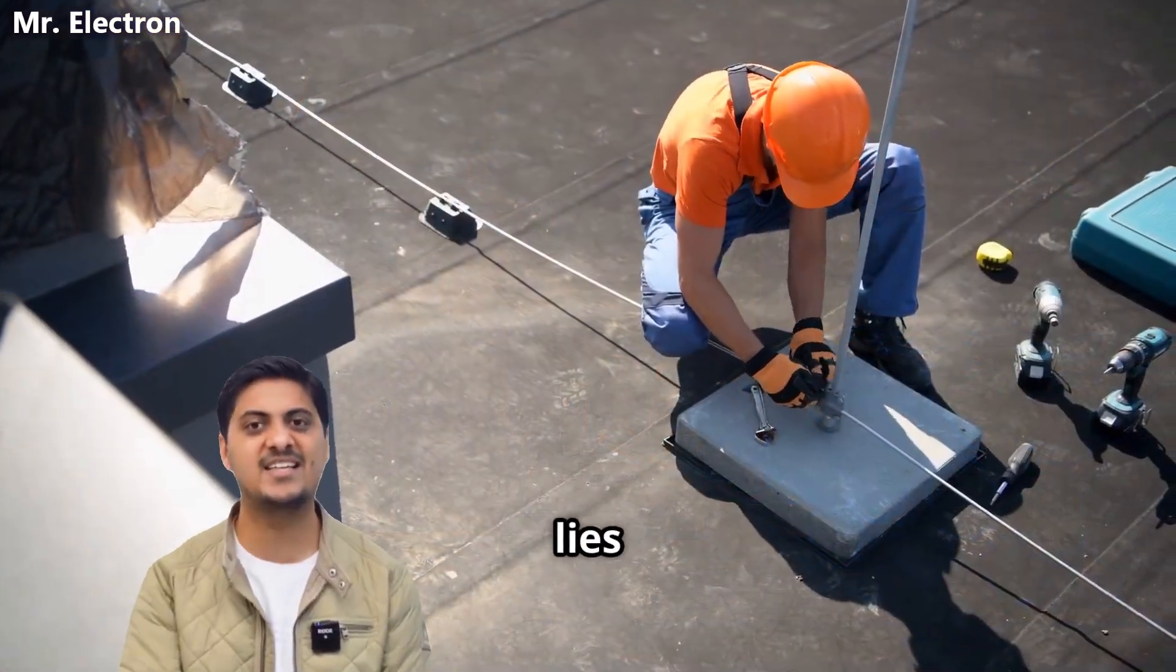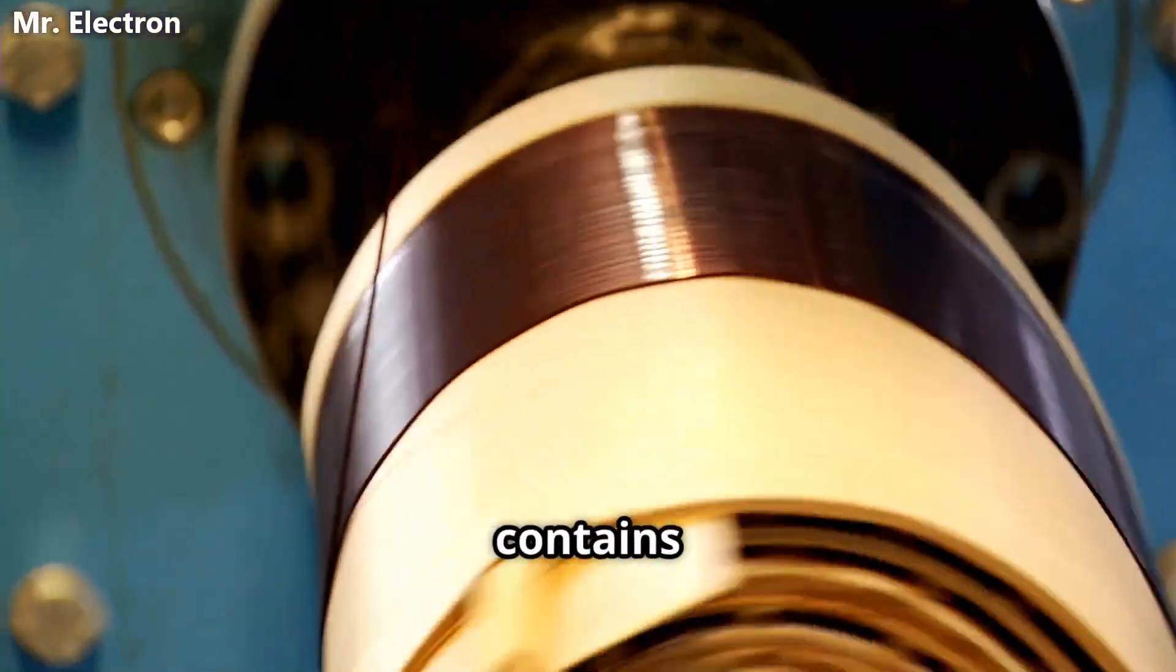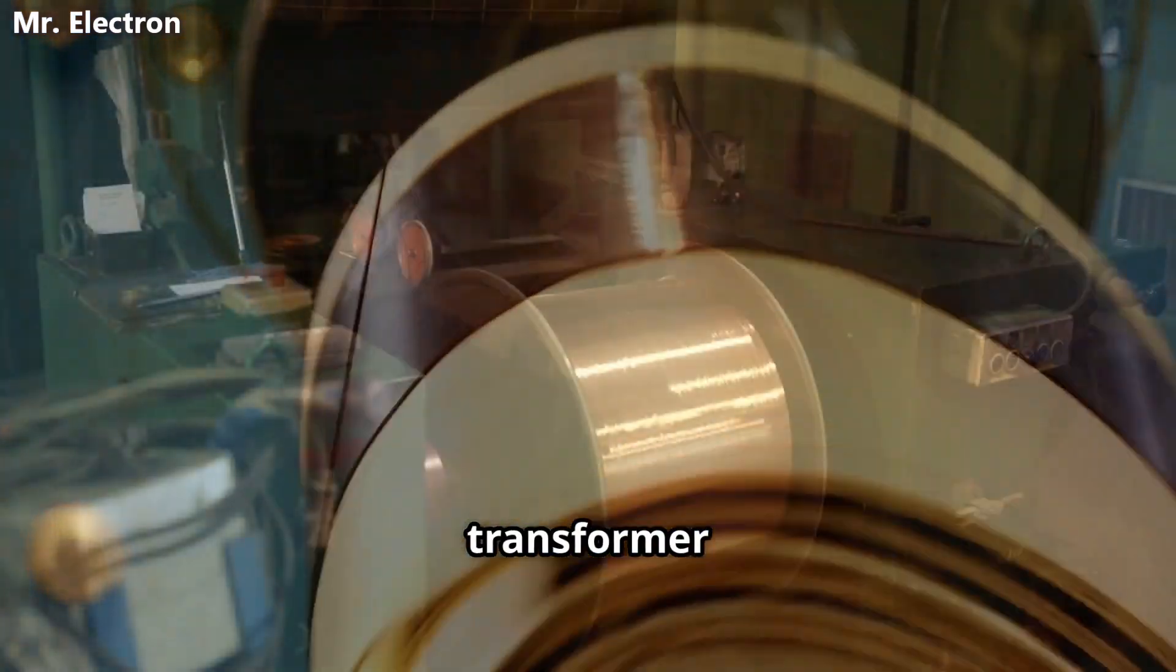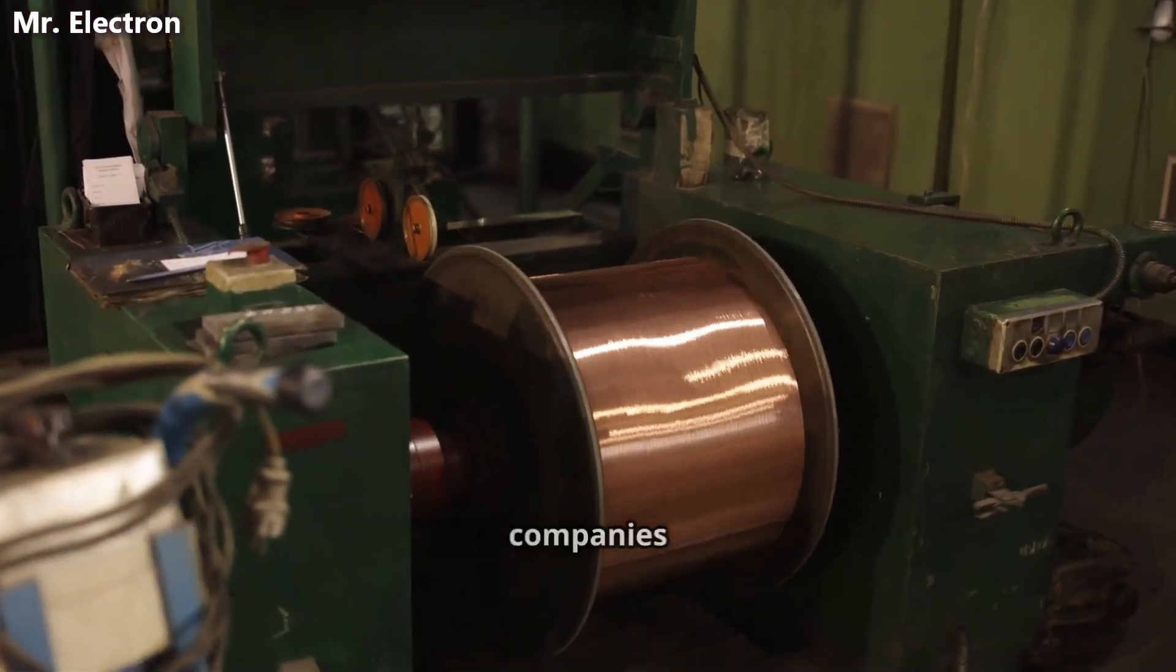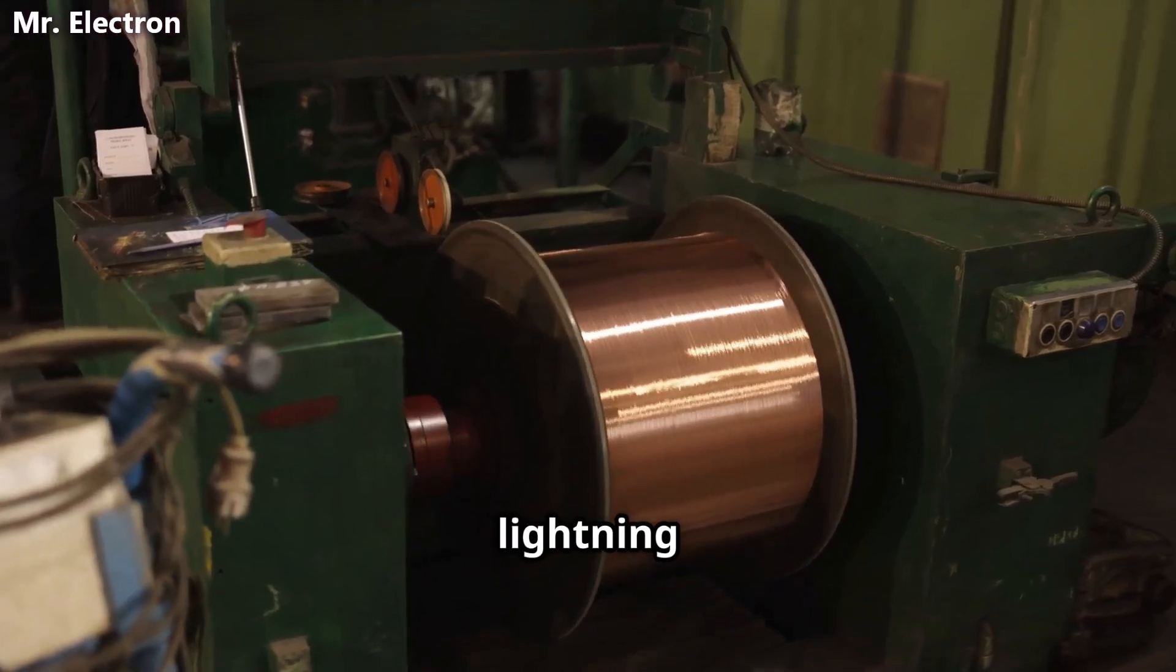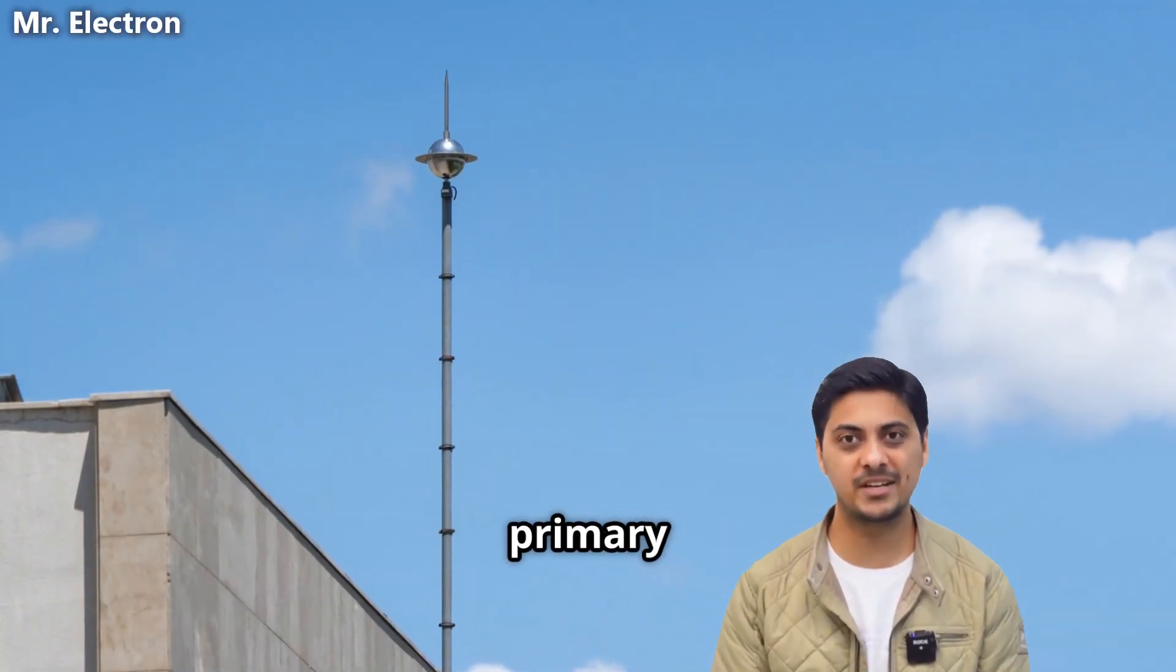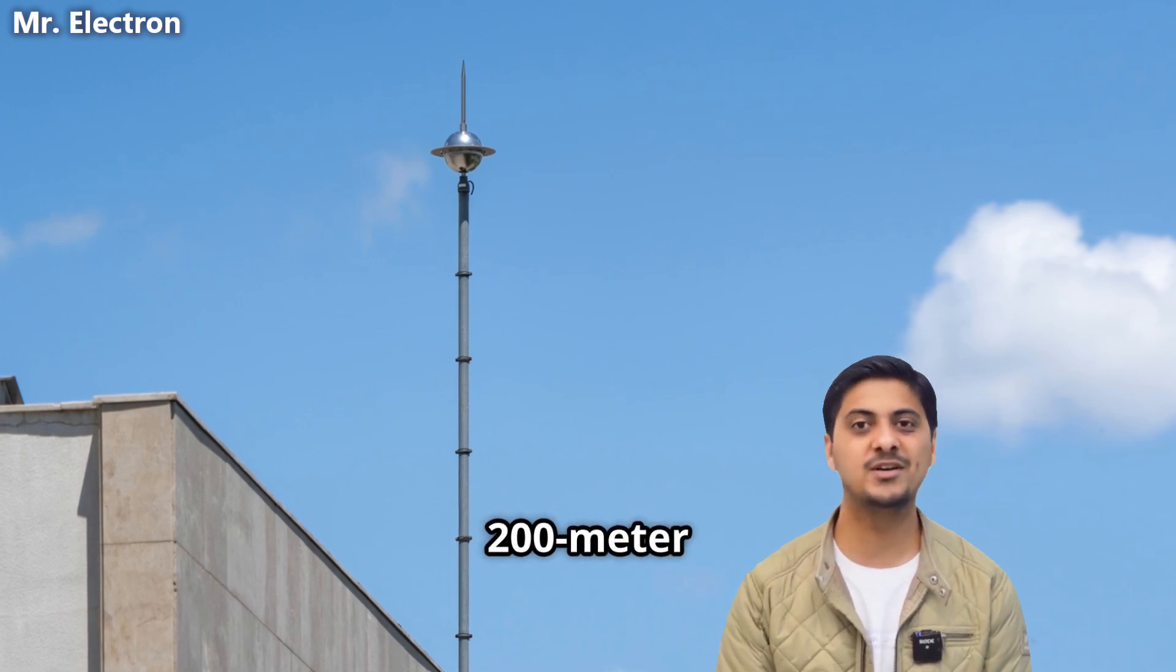Each kit contains a specially manufactured ultra-high voltage transformer designed by government-sponsored companies specifically for lightning energy conversion. One wire from the transformer's primary connects directly to a 200-meter lightning rod extending high above the building.